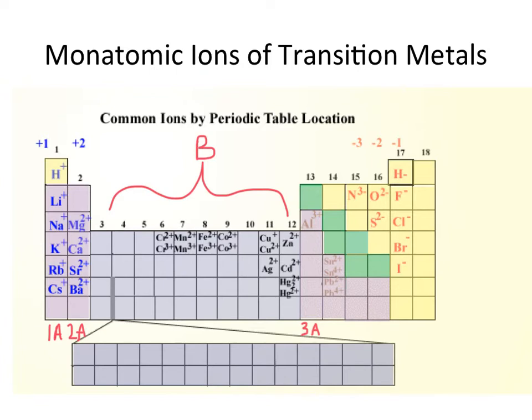I also want to point out that silver, cadmium, and zinc form a backwards L in this block. They are transition elements, but they only have one charge. Both zinc and cadmium are positive 2, and silver is positive 1 in charge. You do need to memorize these charges.